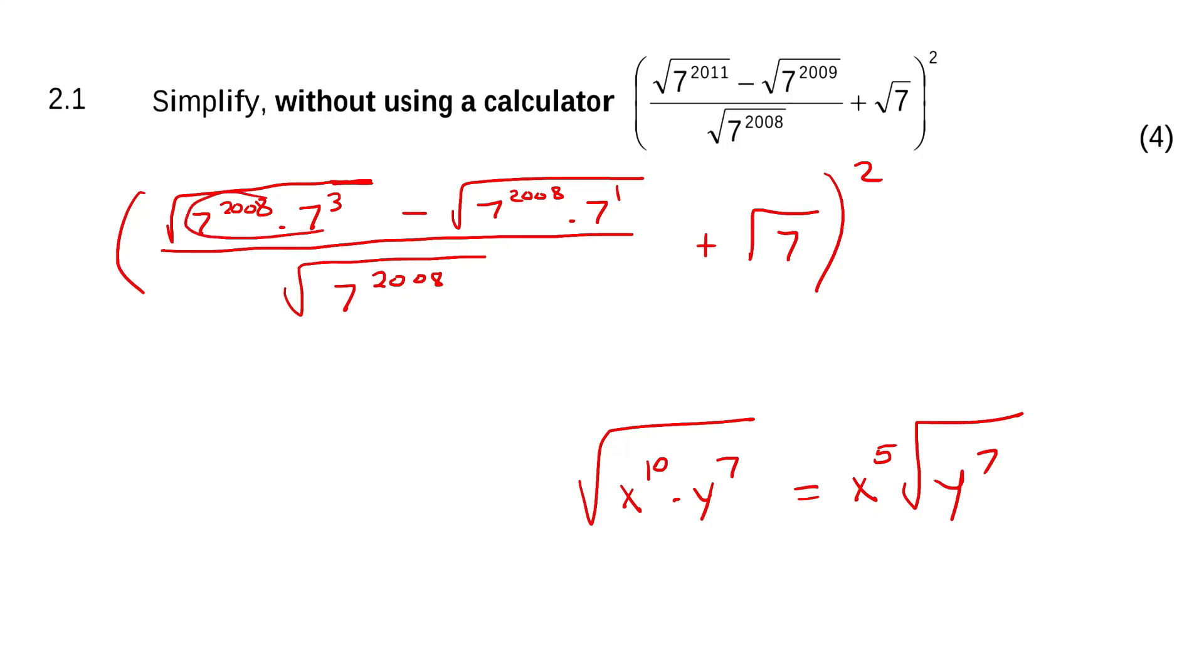So then what can we do here, guys? Well, we can't do anything with the 7 to the 3 because we can't really divide 3 by 2, but we can take out this part. So that'll become 7 to the 1004. And then on the inside, we're just going to have a square root 7 to the 3.